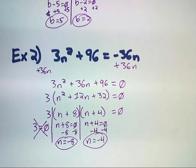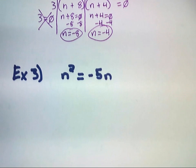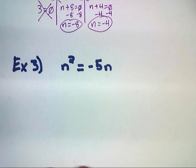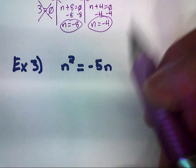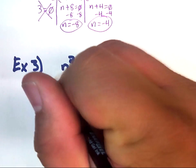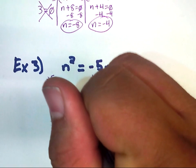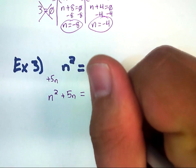Now, there is a situation that does occur sometimes where we might not be able to factor. In this case, take a look at example 3 here. You can see it's n squared equals negative 5n. We actually only have two terms. So, what I'm going to do is I'm going to add 5n to both sides first. Again, they don't line up. Different last names. So, this becomes n squared plus 5n equals 0.